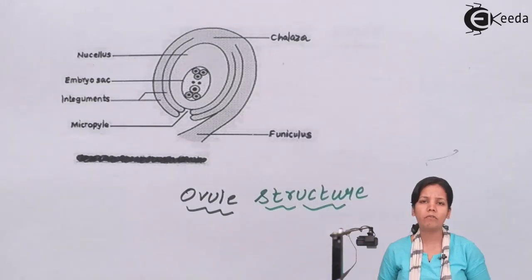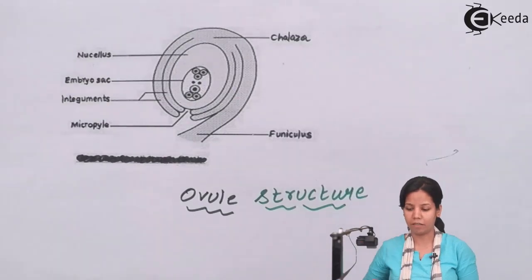The different parts of female gametophyte are nucleus, embryo sac, chalaza, integuments, micropylar end, egg apparatus, synergids, and antipodal cells. Let us see the function of each and every part.